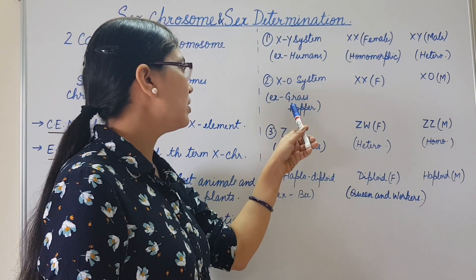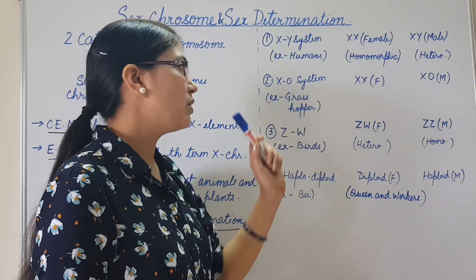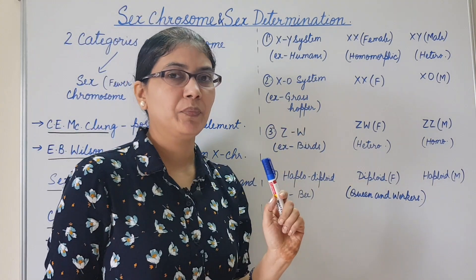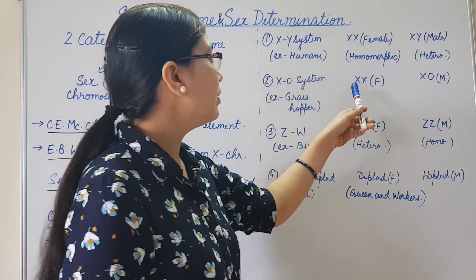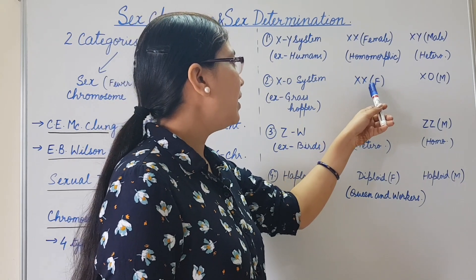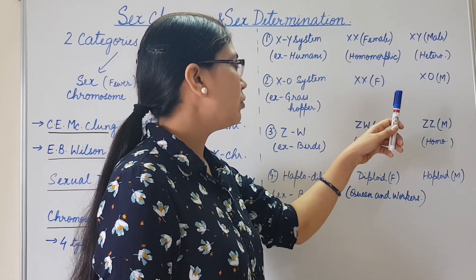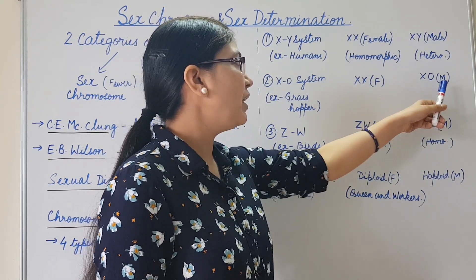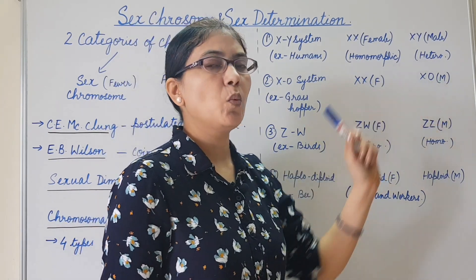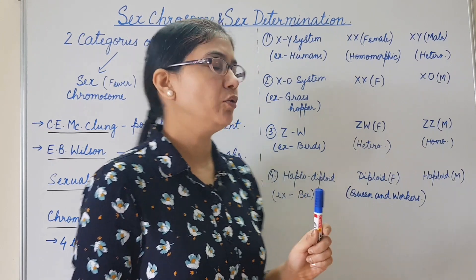The second is the XO system, example: grasshopper. Here, females have a pair of X chromosomes and males have only one X chromosome.